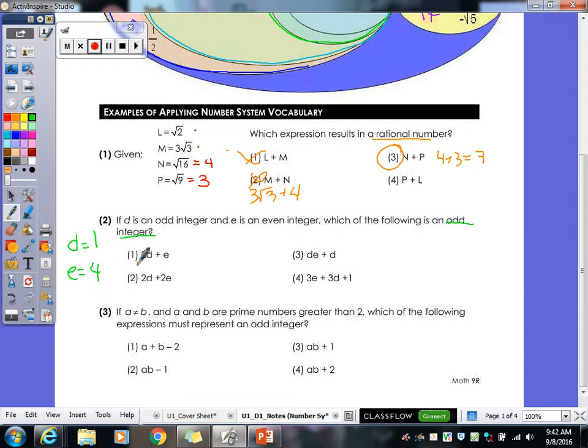So two times D, so two times one, plus four, what does that give us? Six. Well that's not it, because we're looking for an odd integer, six is definitely even. Alright, let's try the next one. So two times one, plus two times four, ten, so that's not it. So then we have one times four, plus one. What does that give us? Five. There we go. There's our odd integer.